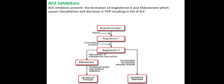As a result, blood pressure increases. So if we stop this process — if we block the angiotensin converting enzyme — we can decrease the entire cascade and reduce blood pressure. This is the role of ACE inhibitors.